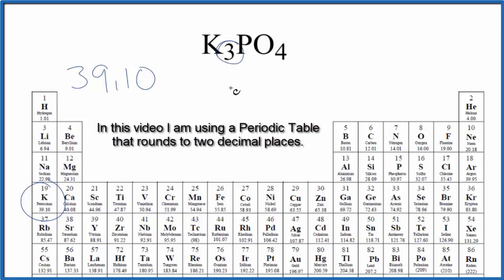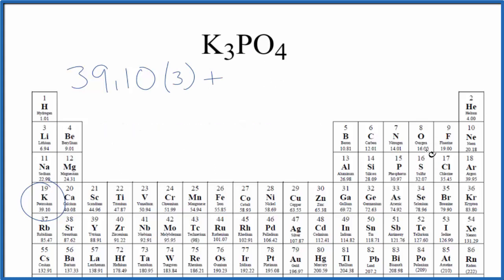We have three potassium atoms, so we multiply this by three. Only one phosphorus atom. Phosphorus is 30.97 grams per mole.